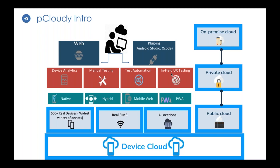You can do real device testing using the platform, automation testing, and you can also get analytics of the device including performance metrics for CPU, battery, and other such metrics while you are doing the testing. With our newest acquisition — pCloudy for testing — we now have in-field user experience testing. We support testing of native apps, mobile web apps, hybrid applications, and progressive web applications. As of right now we have more than 500 real devices, which is the widest variety among our competitors. Many of these devices have real SIMs, so you can do testing of calls, messaging, and operator-related things.